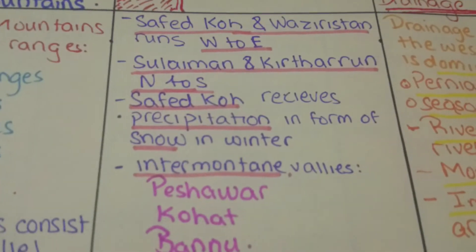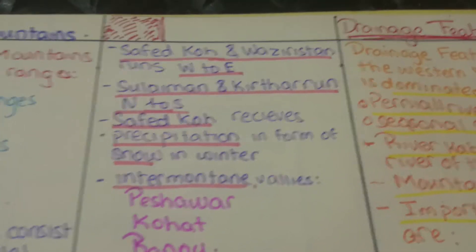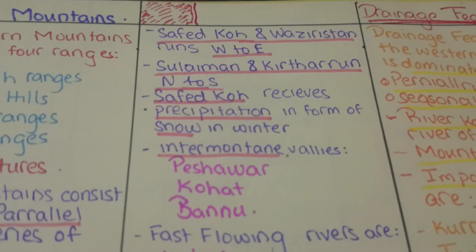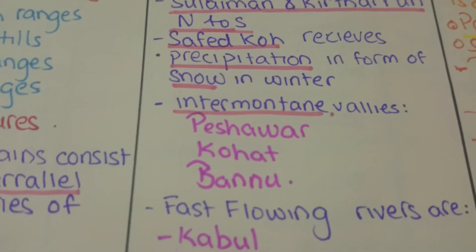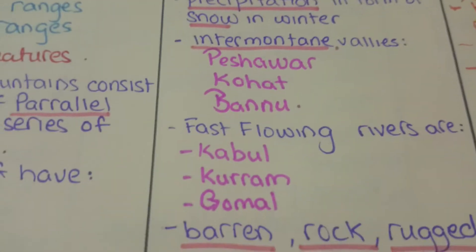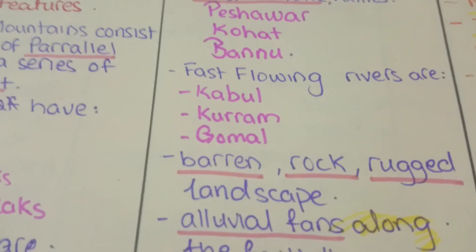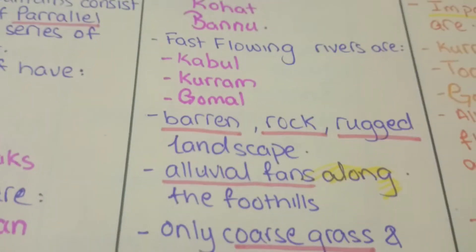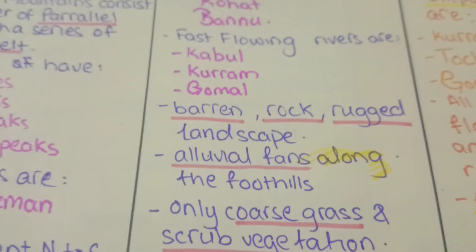Safayd Kaur and Waziristan Hills run from west to east, while Suleiman and Kirtar run from north to south. Safayd Kaur receives precipitation in the form of snow in winter. Valleys here are Peshawar, Kohat, and Bannu. Fast-flowing rivers include the Kabul, Kuram, and Gomal. Barren rocks and rugged landscape, with alluvial fans along the foothills, are also present.